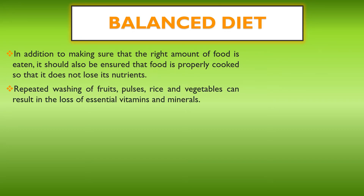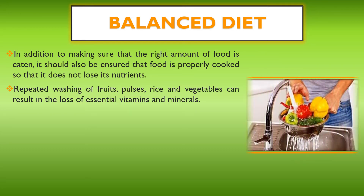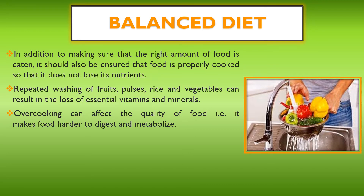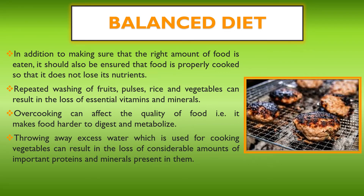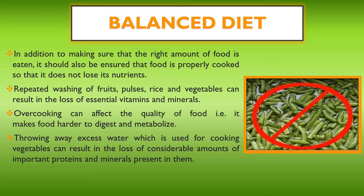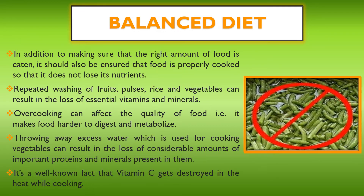We should also keep a check on repeated washing of fruits, pulses, rice, and vegetables as it can result in the loss of essential vitamins and minerals. Overcooking can affect the quality of food — it makes food harder to digest and metabolize. Throwing away excess water used for cooking vegetables can also result in the loss of considerable amounts of important proteins and minerals. It is also well known that vitamin C gets destroyed by heat while cooking, so we should not overcook food.